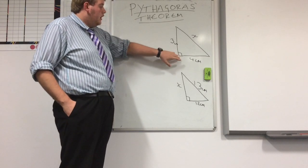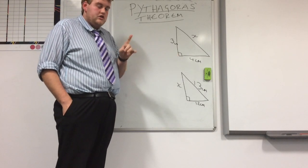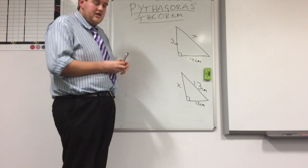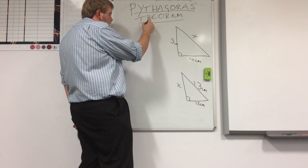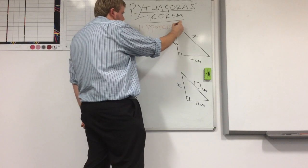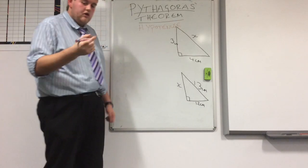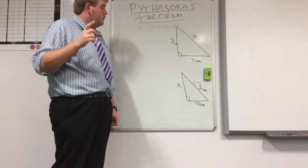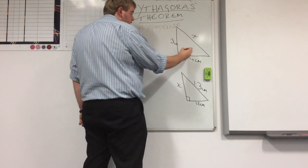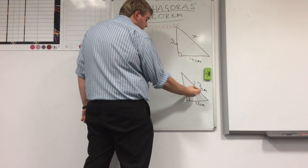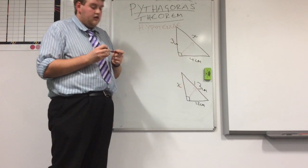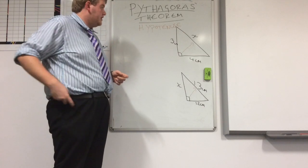One key word you need to know or remember in Pythagoras: that's hypotenuse. You don't particularly need to know how to spell it, but hypotenuse. Your hypotenuse is the longest side in your right angle triangle. The longest side is always opposite your right angle. So in these two triangles, my hypotenuse would be X and 13. This is going to be important in a second.